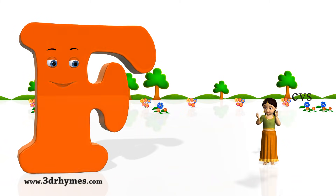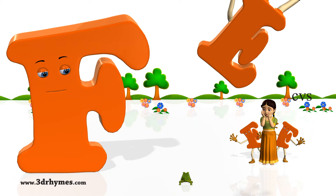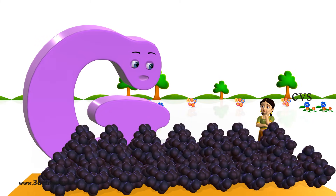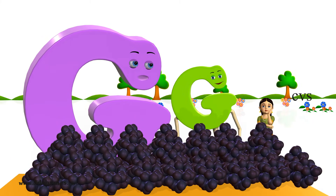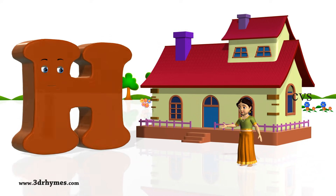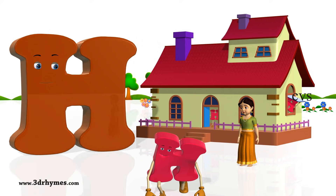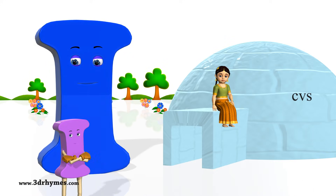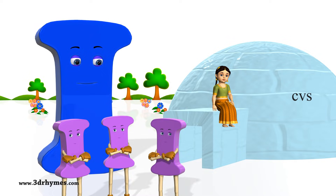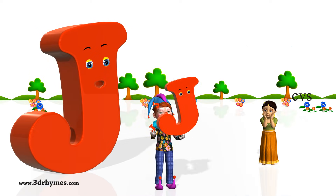F for frog, G for grapes, H for house, I for igloo, J for jackal.